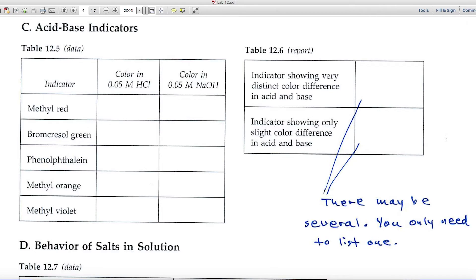Part C deals with acid-base indicators. I've got a number of indicators over here on the left. They're substances that change color depending upon whether they're in acid or in base. The ideal indicator gives you two distinct colors, and some of these work better than others for these particular acids and bases.